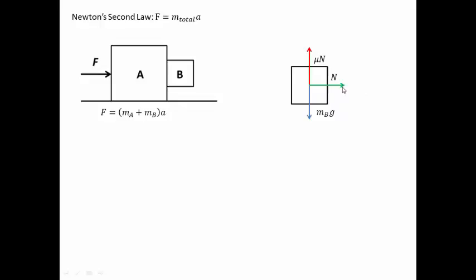So block B, as a result of this force, is accelerating in the right direction as shown here. In other words, block B has an external force equivalent to MB multiplied by A acting on it.